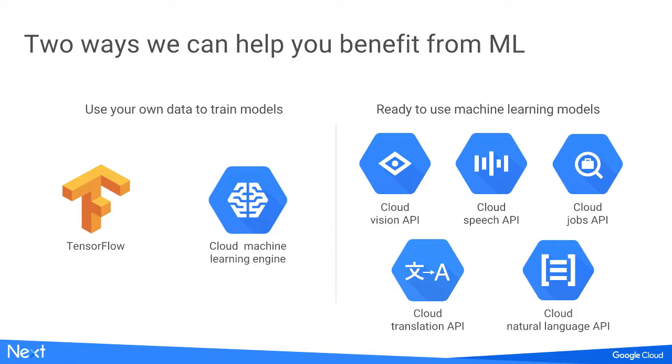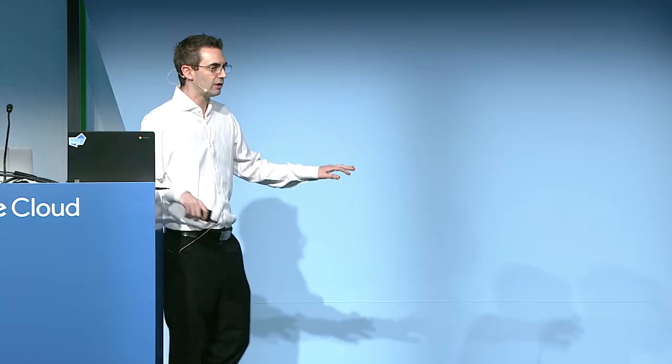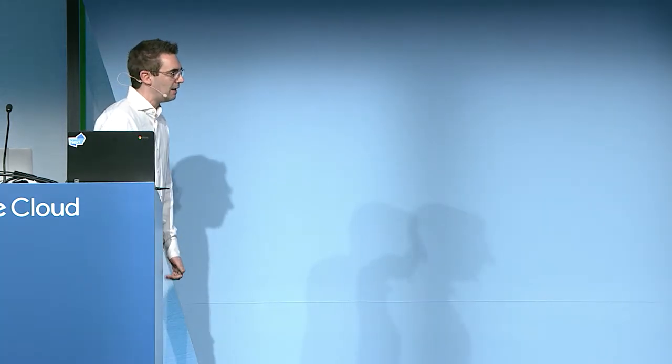And that changed last year. The reason why that changed was we went through a big revolution at Google with machine learning — I'm sure you've heard a lot about it in our keynotes. We really wanted to help other companies take advantage of machine learning and benefit the same way that we did, and we're doing that in two different ways.